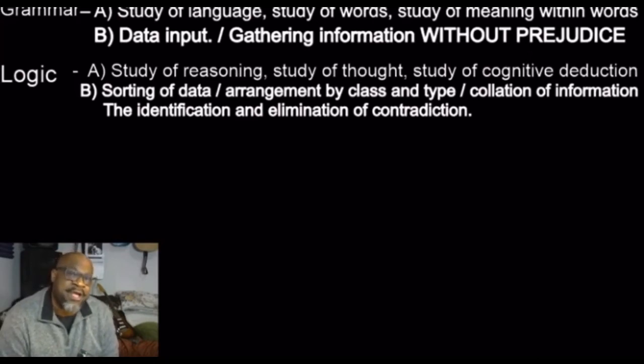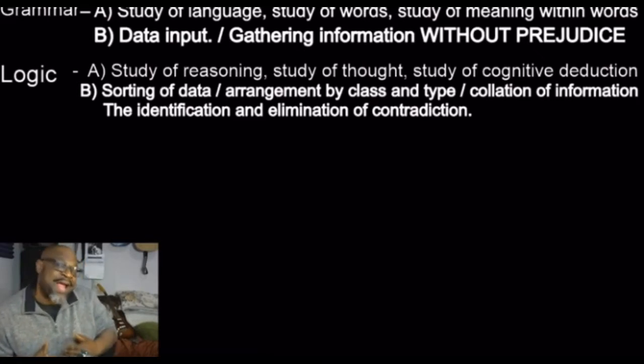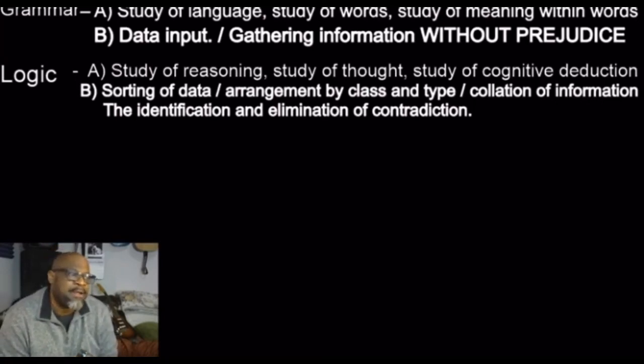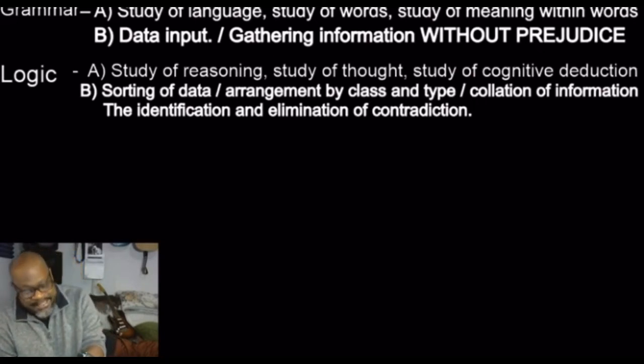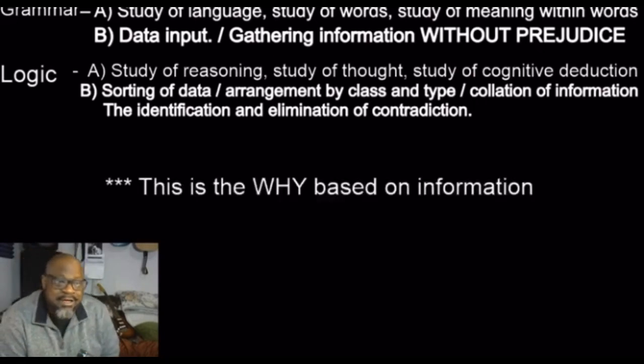In this step, we perform analysis on the data we collected in the first step. Often we find it necessary to return to information gathering based on revelations made during the sorting, arrangement and correlation. This is also the step where special emphasis must be made to the identification of contradiction. Put simply, a contradiction is either a lie or a misunderstanding. This is the why based on information.